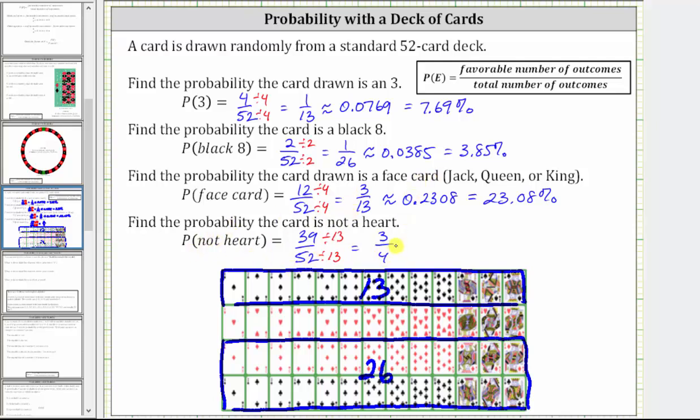This gives us a probability of 3/4, which as a decimal is 0.75, and as a percentage is 75%. I hope you found this helpful.